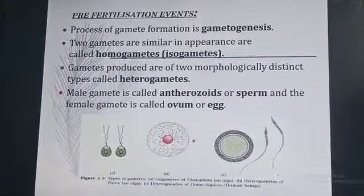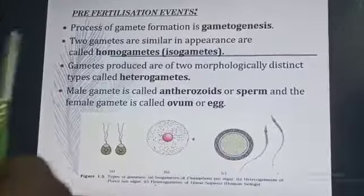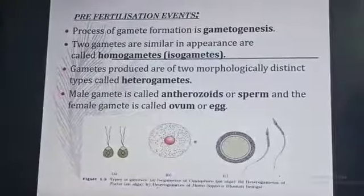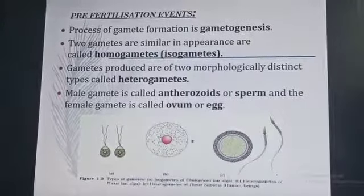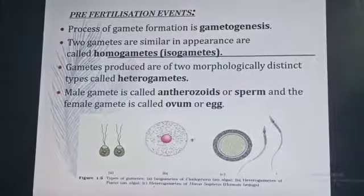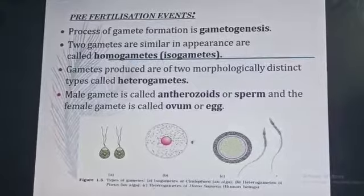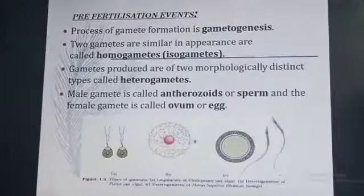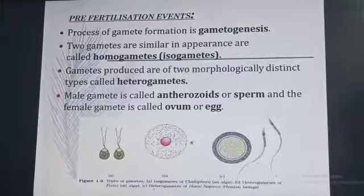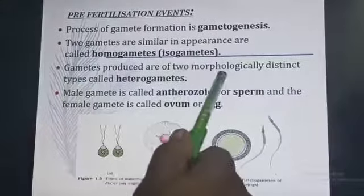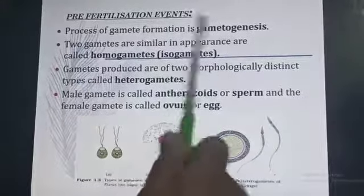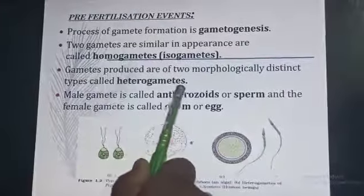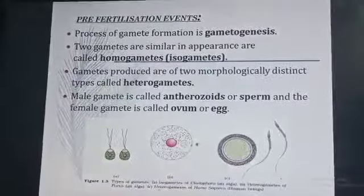What are isogametes? When the two gametes are similar in appearance, they are called homogametes or isogametes. The process of formation of gametes is called gametogenesis. When the gametes are unidentical or morphologically distinct, they are called heterogametes.